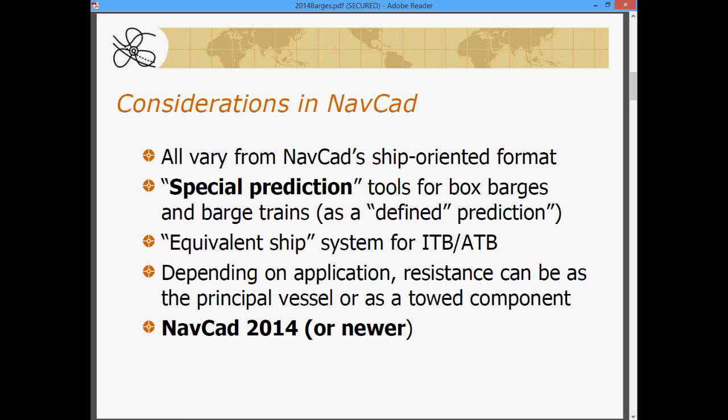Depending on the application, whether it's a box barge or a barge train, for example, the resistance will be identified as either the bare hull resistance as a principal vessel or as a towed component.